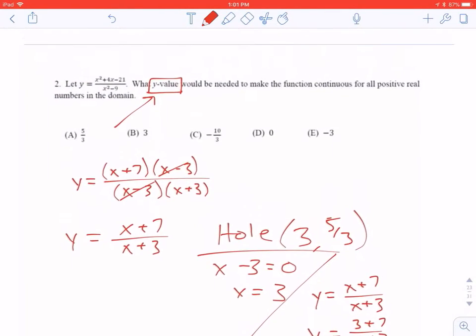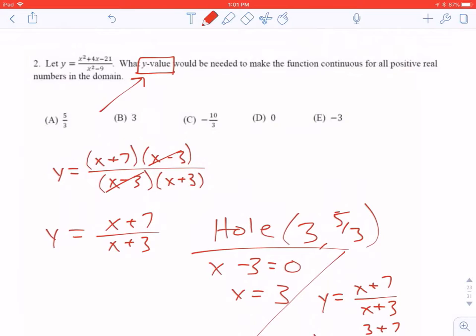To be clear, what y value would be needed to make the function continuous for all positive numbers in the domain? Well, since there's a hole in the graph at 3, 5 thirds, the plug, the hole, the y value has to be 5 thirds.